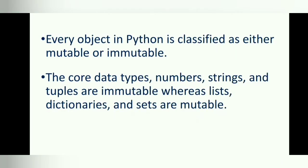One last point: every object in Python is classified as either mutable or immutable. The core data types—numbers, strings, and tuples—are immutable, whereas lists, dictionaries, and sets are mutable.